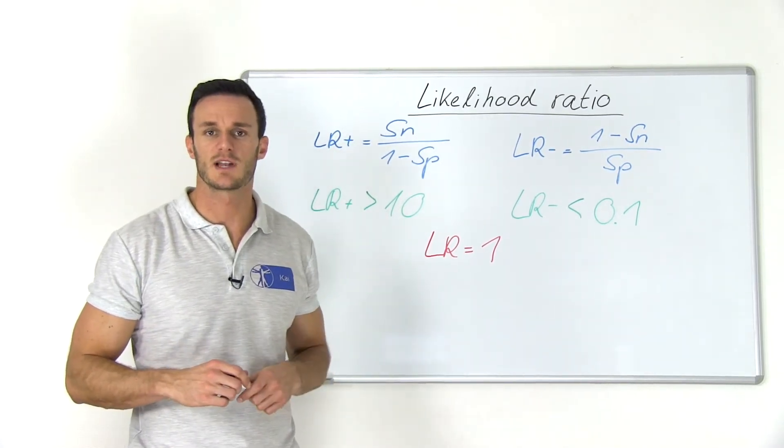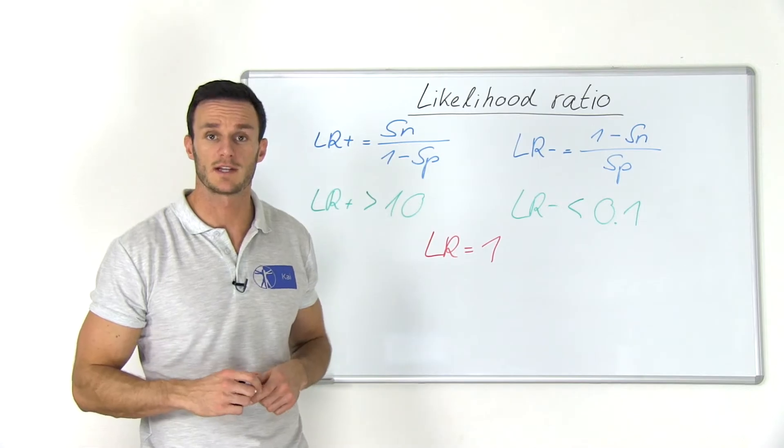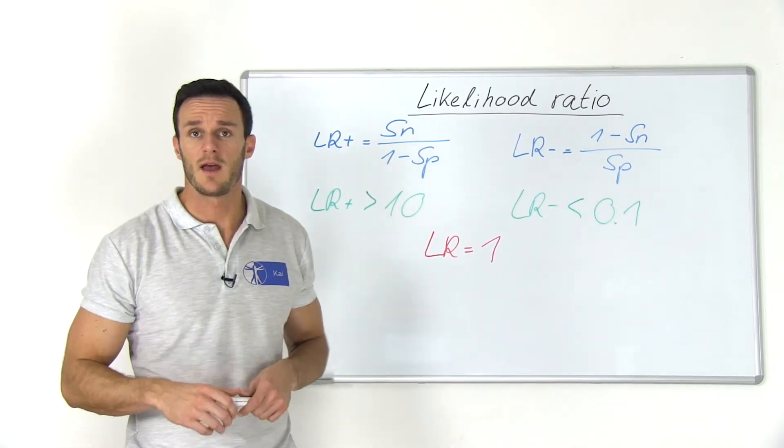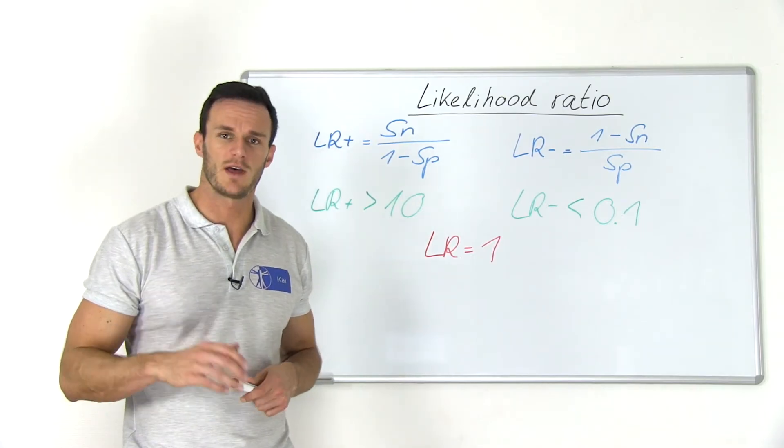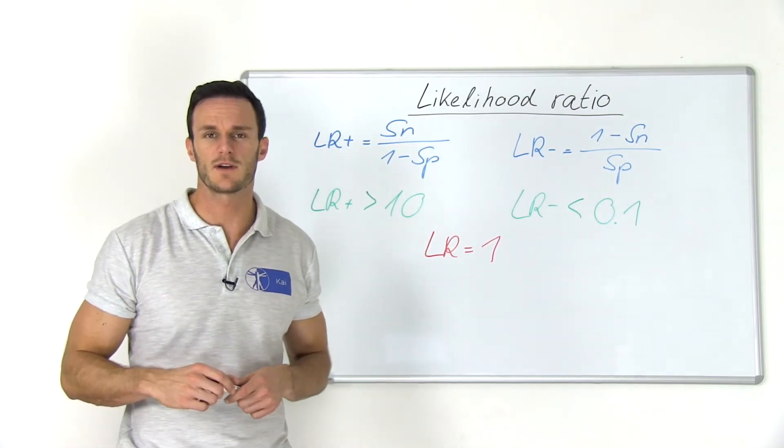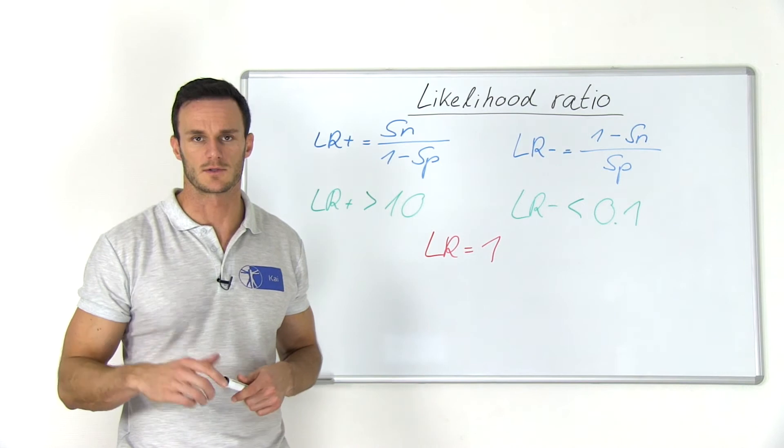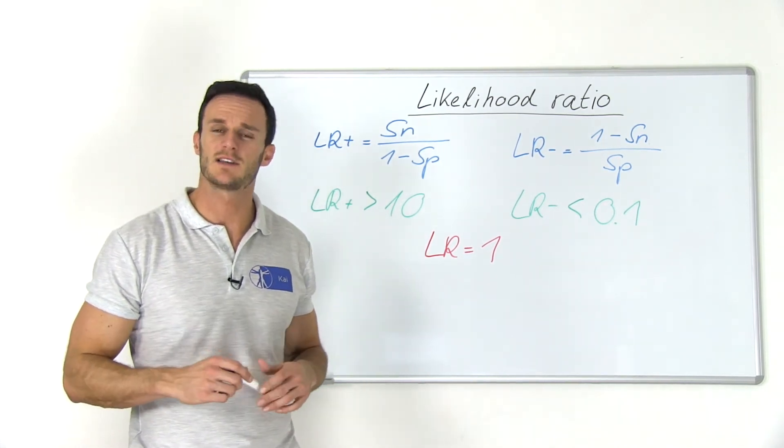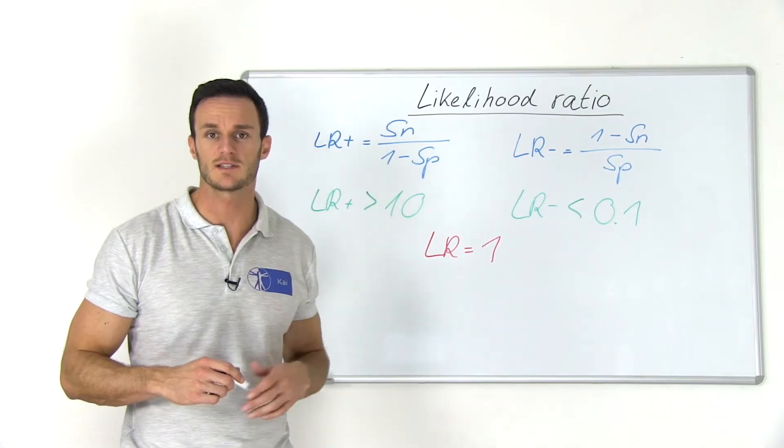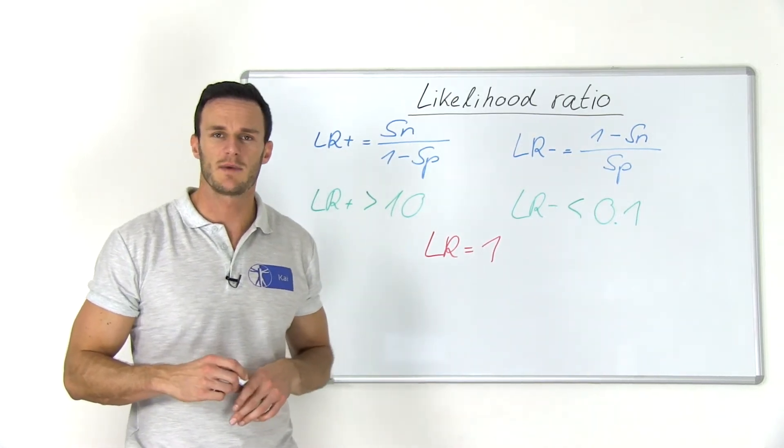immediate swelling, haemarthrosis and a feeling of instability. On top of that, you have already excluded a knee fracture with the help of the Ottawa knee rules. Based on the prevalence of 5% plus the information you got during your anamnesis and assessment, you estimate the chance for an ACL tear at about 60%.